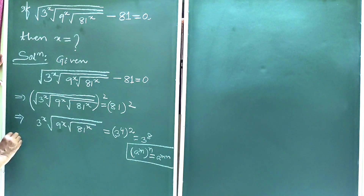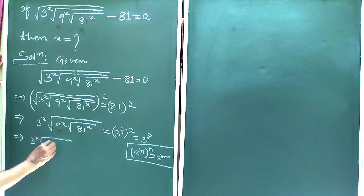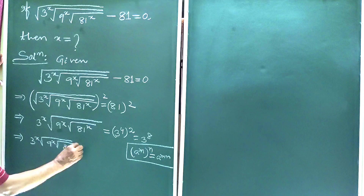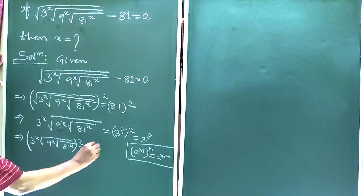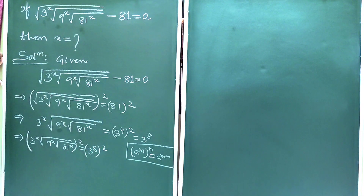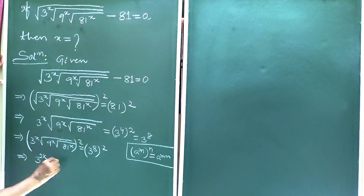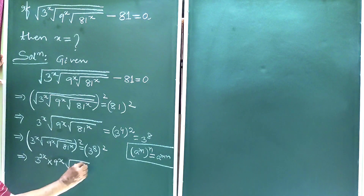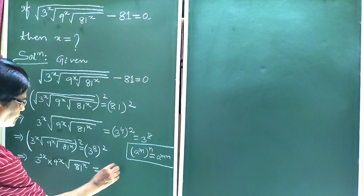So this implies 3 to the power x, root over whole 9 to the power x, under root over whole root over whole 81 to the power x, is equal to 3 to the power 8. Now squaring both sides, we get 3 to the power 2x into 9 to the power x, root over whole 81 to the power x, is equal to 3 to the power 16.